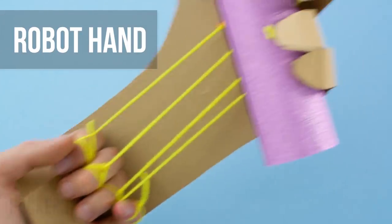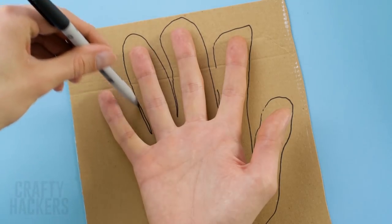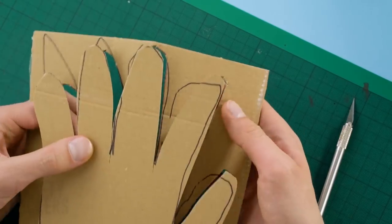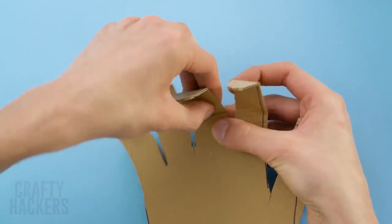Robot hand. Put on your engineer cap because we're going to build a robotic hand. It's actually pretty easy to do. Check it out. First trace your hand onto a piece of cardboard. Cut it out using scissors or an exacto knife. Bend the hand where the knuckles would be.